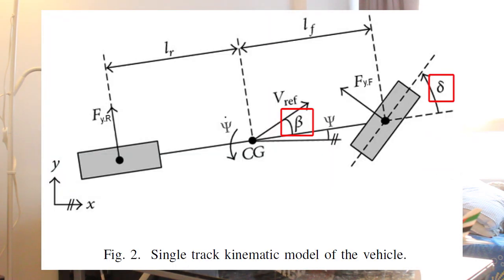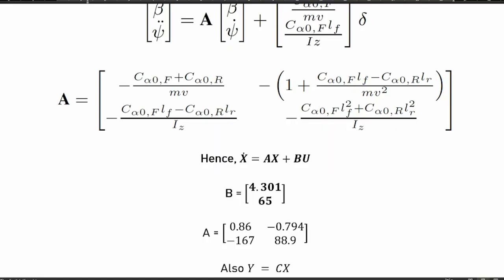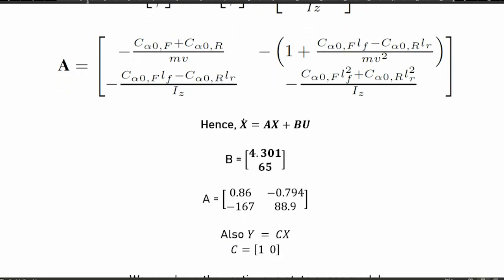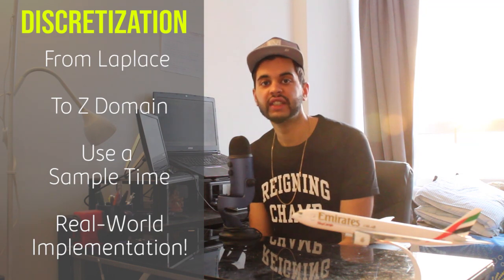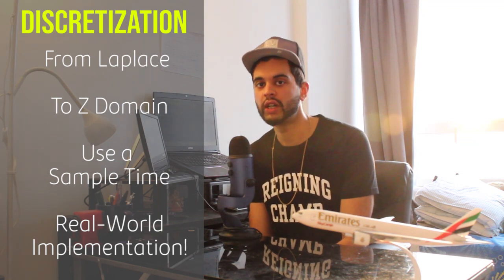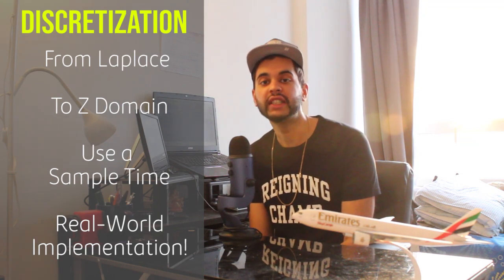The objective is to use the steering angle, denoted by delta, in order to control the side slip angle of the car, beta. The state space matrices and the data are all provided within the paper linked in the description below. We will first discretize the model into the discrete time domain before applying our controller design.